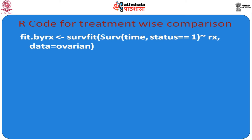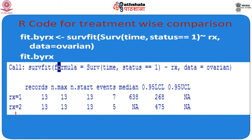Now for treatment-wise comparison, using survfit with Surv() and status equals 1 for both treatments, it gives us the result that in Rx1, a total number of 7 events occurred, and in Rx2, 5 events occurred. The median survival time for Rx1 is 638 days with the lower limit of the confidence interval provided.